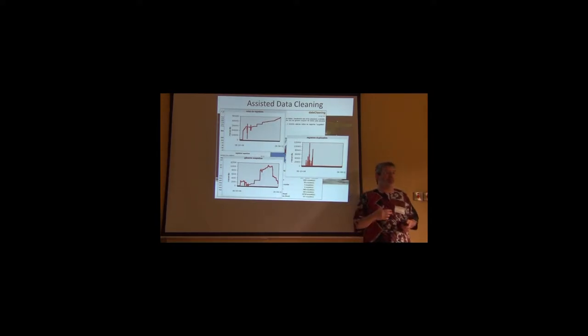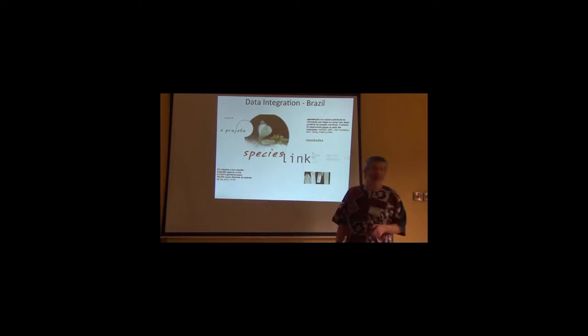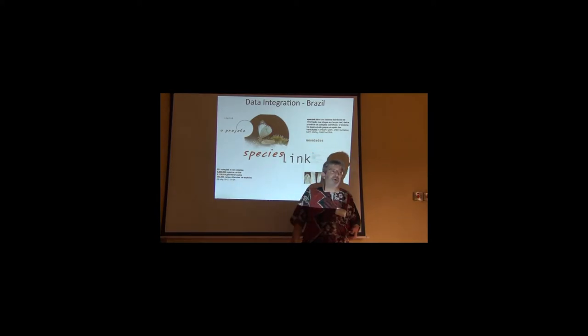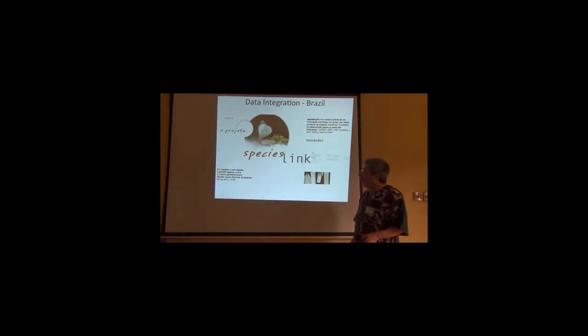These are tools to help us do this biodiversity informatics mission better. One of the most exciting things we can do is integrate the data. Up till now everything I've told you about is really something that you could do inside of one institution. Species link and you all know of other examples—VertNet, GBIF—species link currently integrates 251 collections or sub-collections, provides access to 5.2 million records. I think it's more like 7 million now, of which about half are geo-referenced, and they refer to approximately 390,000 species.